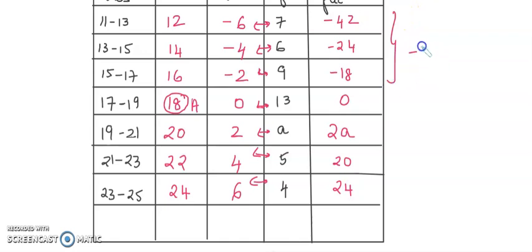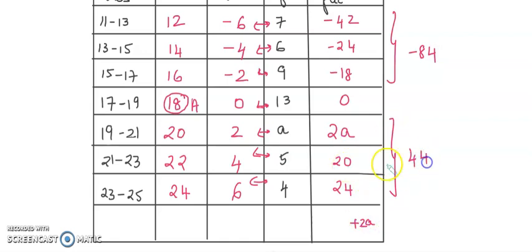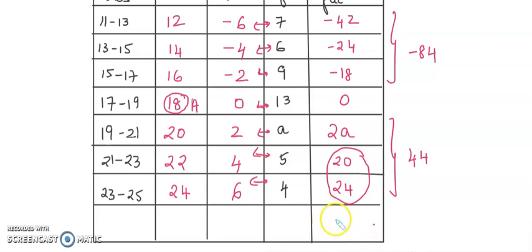When you add the negative products it is minus 84, and adding the positive side — writing 2a separately — we get 44. So negative 84 and 44 gives negative 40. So sigma f*d_i is written as 2a minus 40.